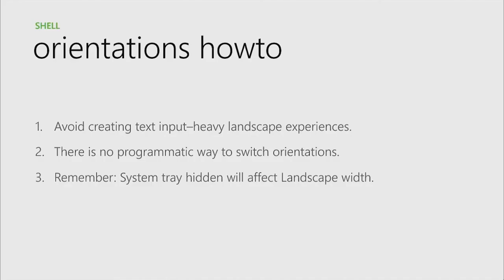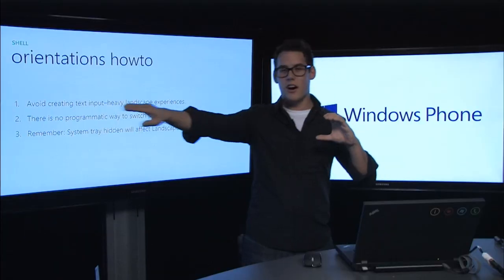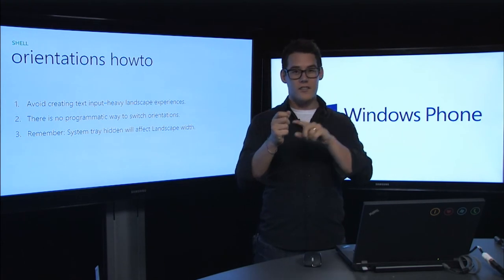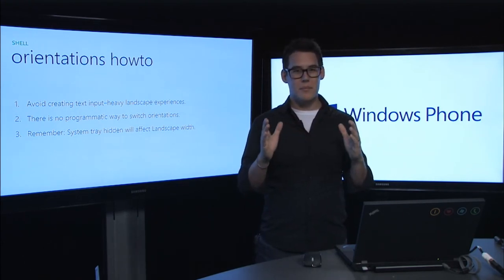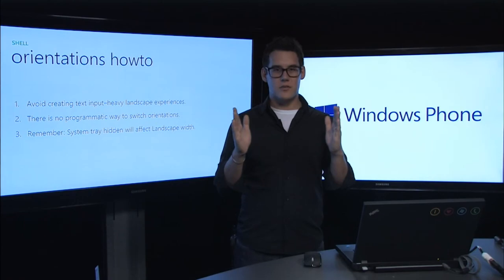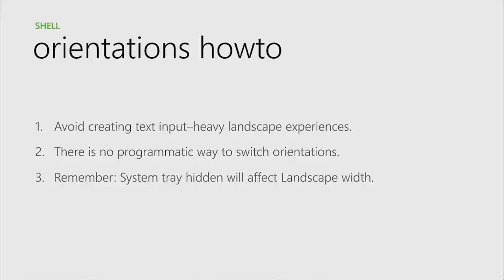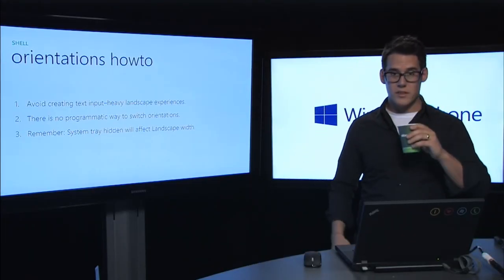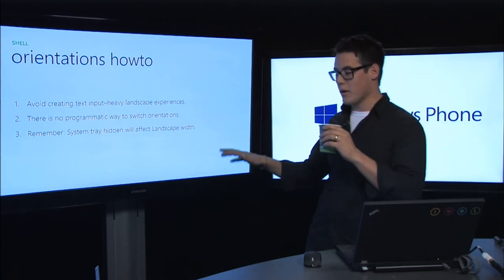A couple of orientation how-tos: avoid creating text-input-heavy landscape experiences — text is hard to read when lines are long before wrapping, so limit that text length in portrait mode. There's no programmatic way to switch orientations. And remember, showing or hiding the system tray or app bar will affect the landscape width of your UI.